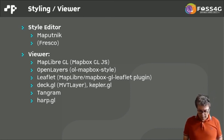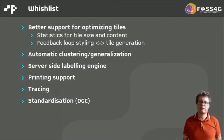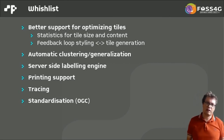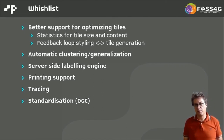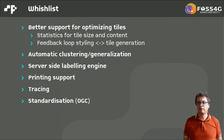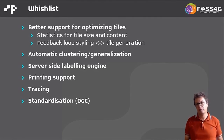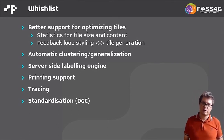To finish the talk, I've compiled a list of wishes — features I would like to have in some of these tile servers or tile stacks. First, better support for optimizing tiles, with good statistics about tile size and tile content. Second, a good feedback loop between styling and tile generation, because for styling you need properties embedded in vector tiles, and when you change styling, the requirements for tile content can change. Third, more functionality for clustering — point clustering or other types of generalization — there are some servers supporting this but room for improvement remains.